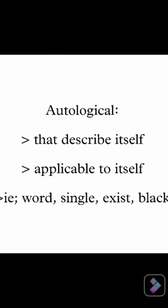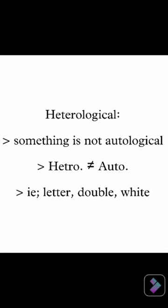Autological means a word describes itself, and heterological means something is not autological. The question is: which category do these two words fall into? Plus, you have a third category. Using simple logic, this becomes a paradox.